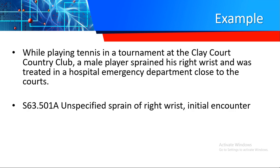The code for that is S63.501A — unspecified sprain of the right wrist, initial encounter. In Chapter 19, it is very important to determine the seventh character, which is A for initial, D for subsequent, and S for sequela. There are additional seventh characters in Chapter 19.